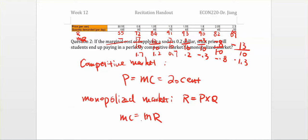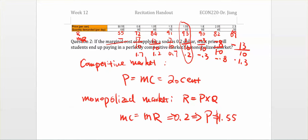Since the profit maximization rule for a monopoly is marginal cost equal to marginal revenue, and we know the marginal cost is $0.20, the matching scenario is where marginal revenue also equals $0.20. That corresponds to a price of $1.55. So the student ends up paying $1.55 in the monopoly market.